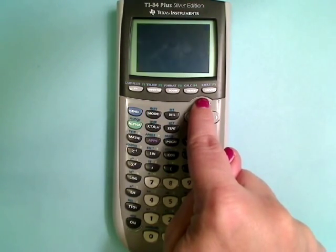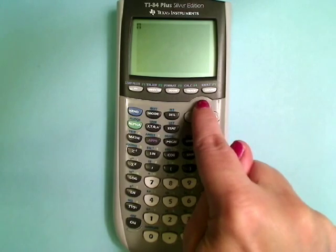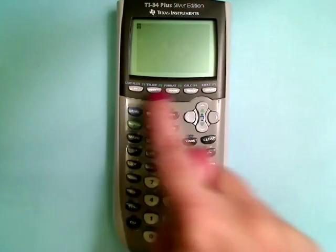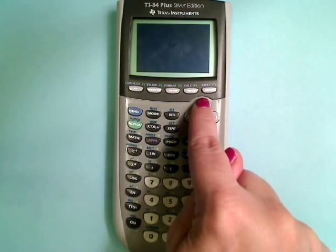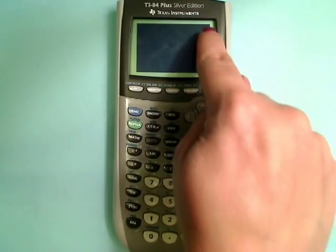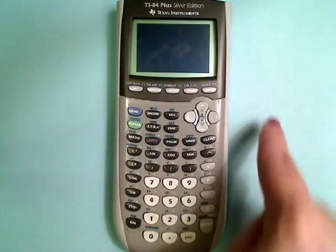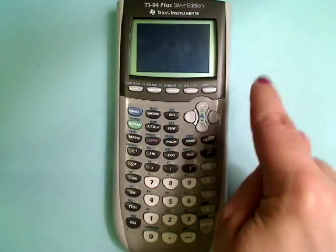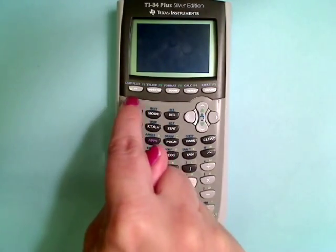So if I press the second button and then the up, it makes the screen darker. And if I press second and then up and hold it, it just keeps getting darker. And as it was getting darker, there was a number in this upper corner.